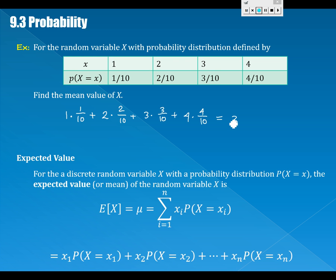Here it is with all its glory. For a discrete random variable X with probability distribution P(X=x), the expected value or mean of the random variable X is E[X]=μ=Σ xi*P(X=xi). All we're saying is take value times its probability plus value times its probability for all the values.